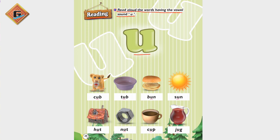This one is cub. What is a cub? Lion's baby is called cub. Tub, which we put water in. Bun, which we make a sandwich or burger. Next one is sun. Hut, hut. Nut, cup.